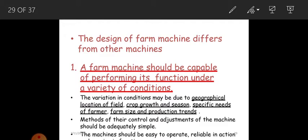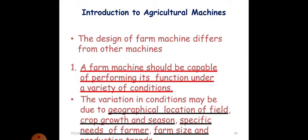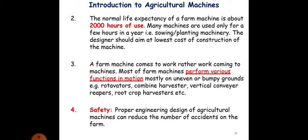The normal life expectancy of the farm machine is about 2000 hours of use. Many machines are used for a few hours in a year, that is sowing, planting machinery. The designer should aim at lowest cost of construction. The farm machine comes to work, rather work coming to the machine. Most farm machines perform various functions in motion, mostly on uneven and bumpy grounds. For example, rotavators, combined harvesters, vertical conveyor reapers, root crop harvesters, etc. Safety should be kept in mind, that is proper engineering design of agricultural machine can reduce number of accidents on farms.